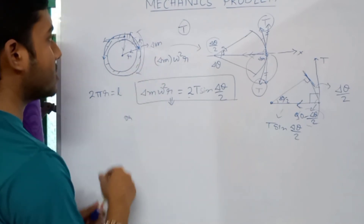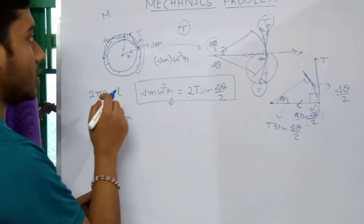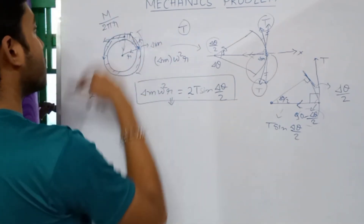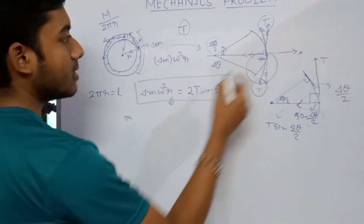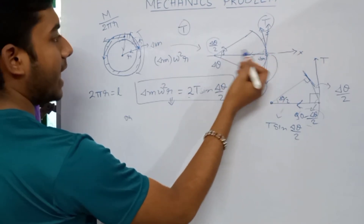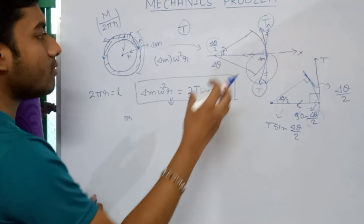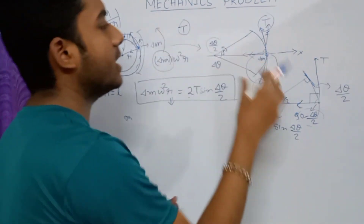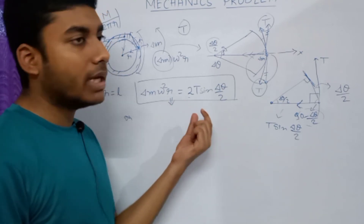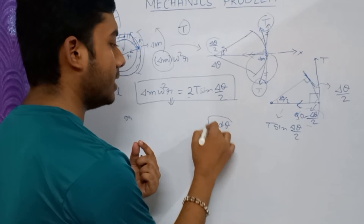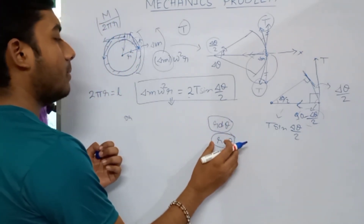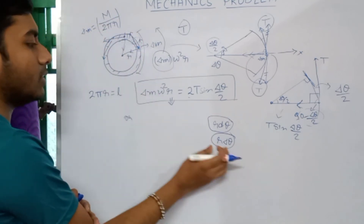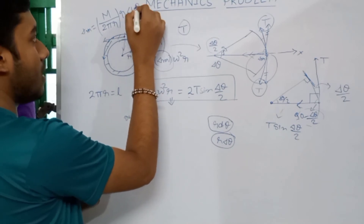The total mass is m, so the mass per unit length is m/2πr. For a small arc element, the small length in polar coordinates is r·dθ, so δm = (m/2πr)·r·δθ = (m/2π)·δθ.